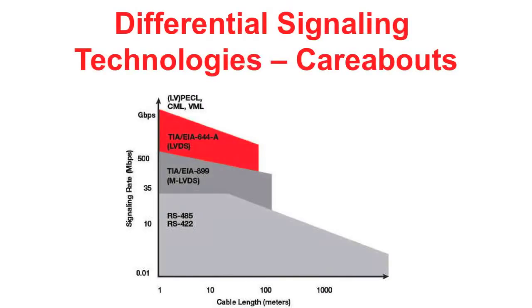There are many differential signaling technologies available today such as LVDS, MLVDS, CML, and PECL. Each of these technologies were developed for different application requirements to address different signaling rates.